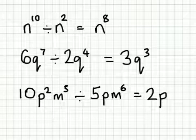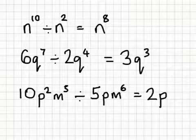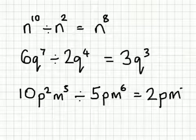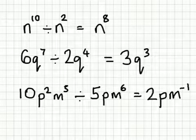And then finally, I've made sure we've got a negative number here. 5 take away 6 is negative 1, so it becomes m to the power of negative 1. And that's the answer to this last one here, which is quite difficult.